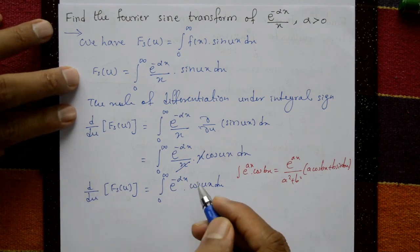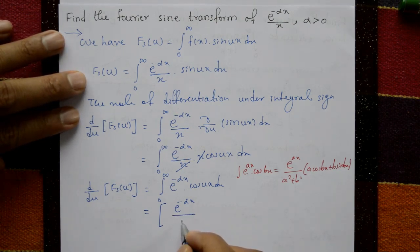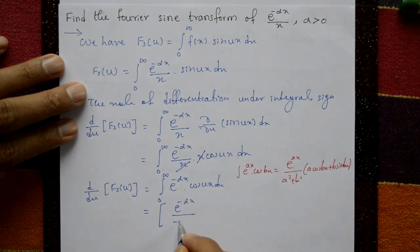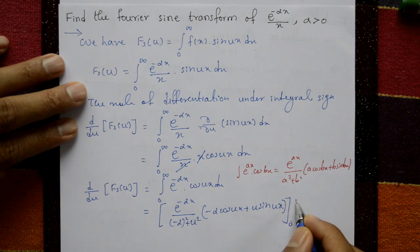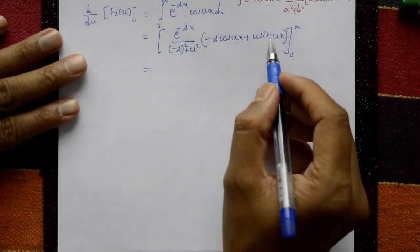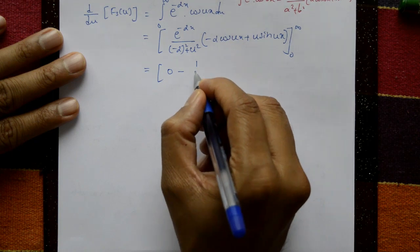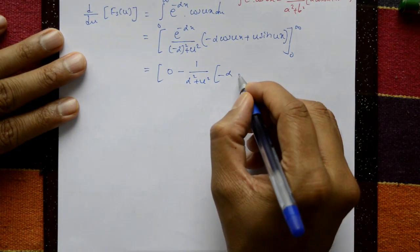Here a equals minus alpha and b equals u. So the result is e raised to minus alpha x over (alpha squared plus u squared), times (minus alpha cos(ux) plus u sin(ux)), evaluated from 0 to infinity. Putting x equals infinity, e raised to infinity gives 0. Putting x equals 0: e raised to 0 is 1, cos 0 is 1, sin 0 is 0, giving minus alpha over (alpha squared plus u squared).